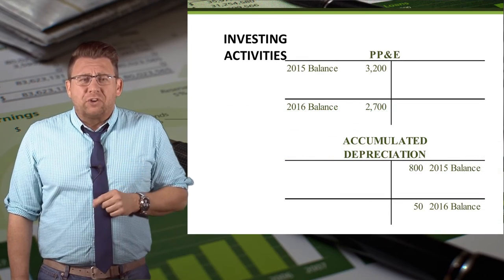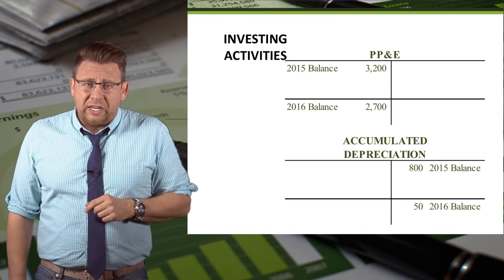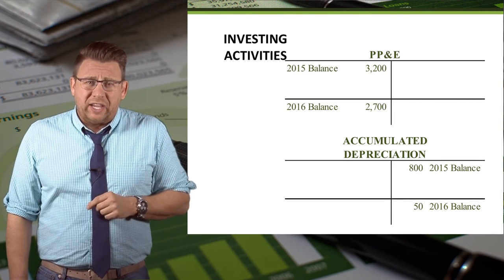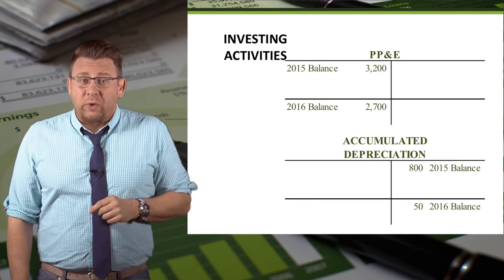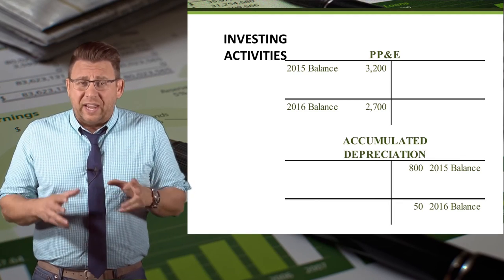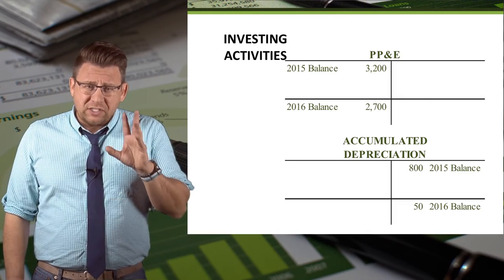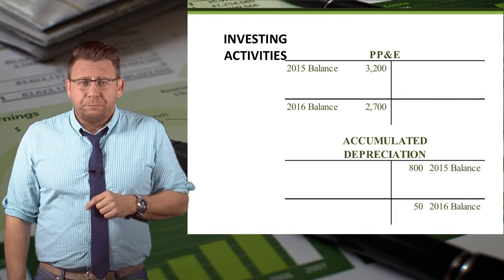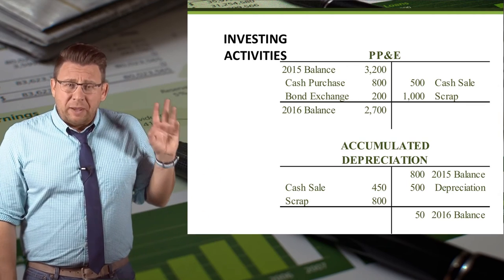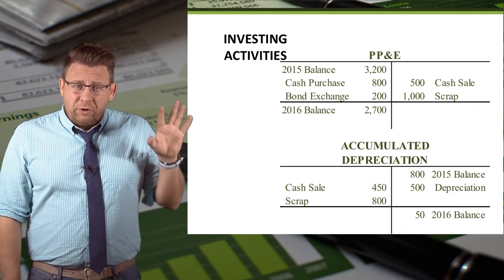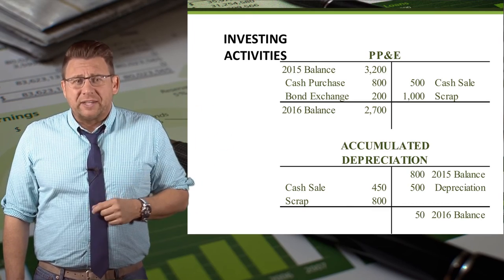Finally, you may encounter questions in which you are not given all the information you need with the additional financial data. When this happens, I would strongly encourage you to write out the T-account with the data that you do know, and then start solving for what you weren't given. Here, I've listed all of the items, but if some things were missing, I would have been able to figure out what it is and the cash impact of it.